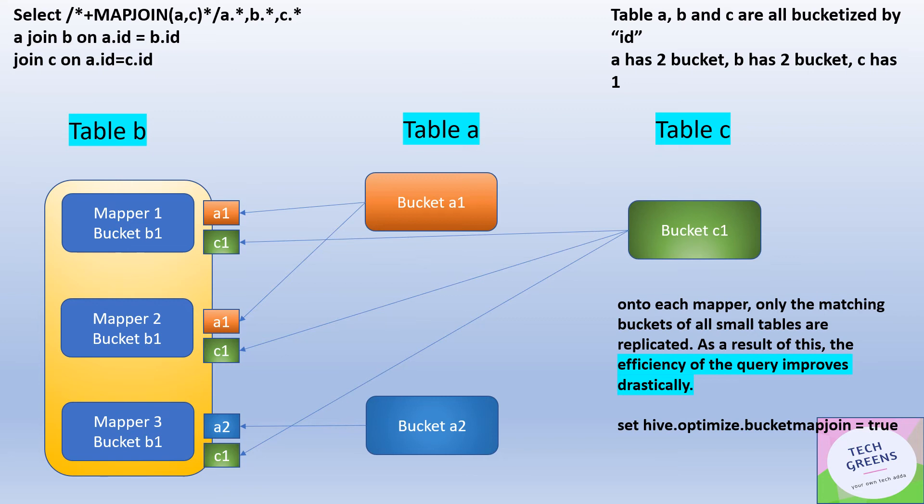Similarly in Mapper 2, for the same bucket we fetch the bucket A1 and C1. And in Mapper 3, this is also for bucket B1. Here also it is A2 and C1.